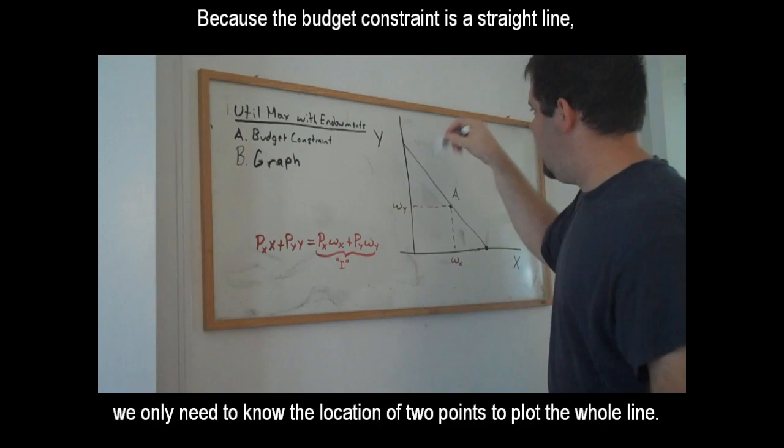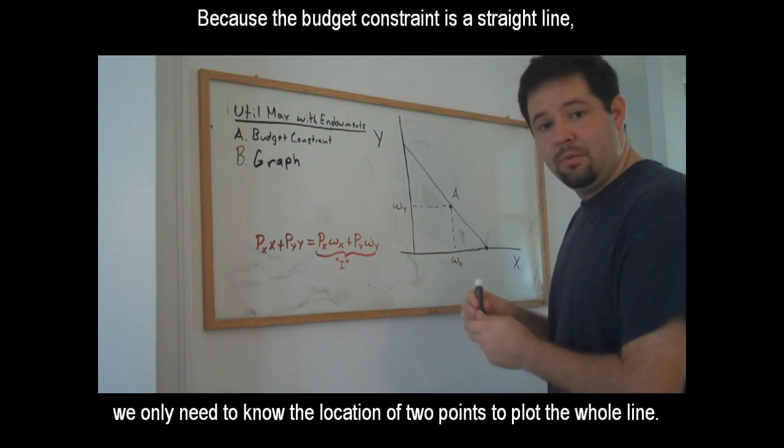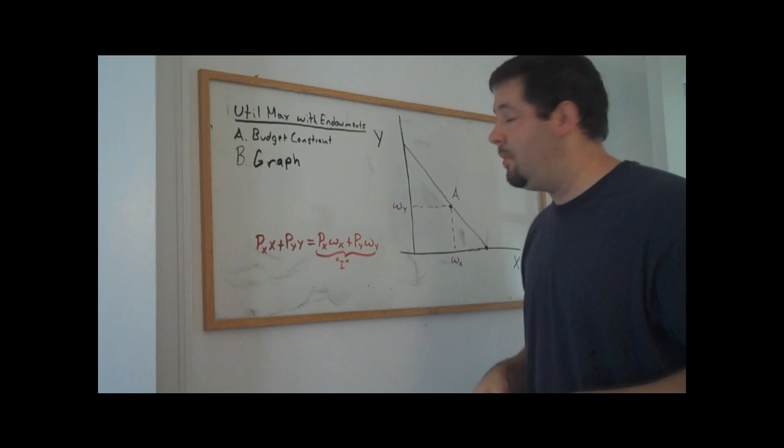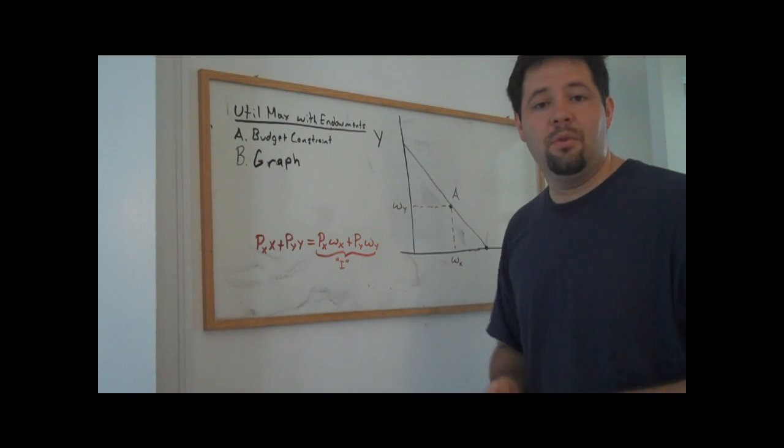And this point here, when we connect the dots and do that straight line through the original endowment point, this point here would be how much Y the consumer would be able to afford.